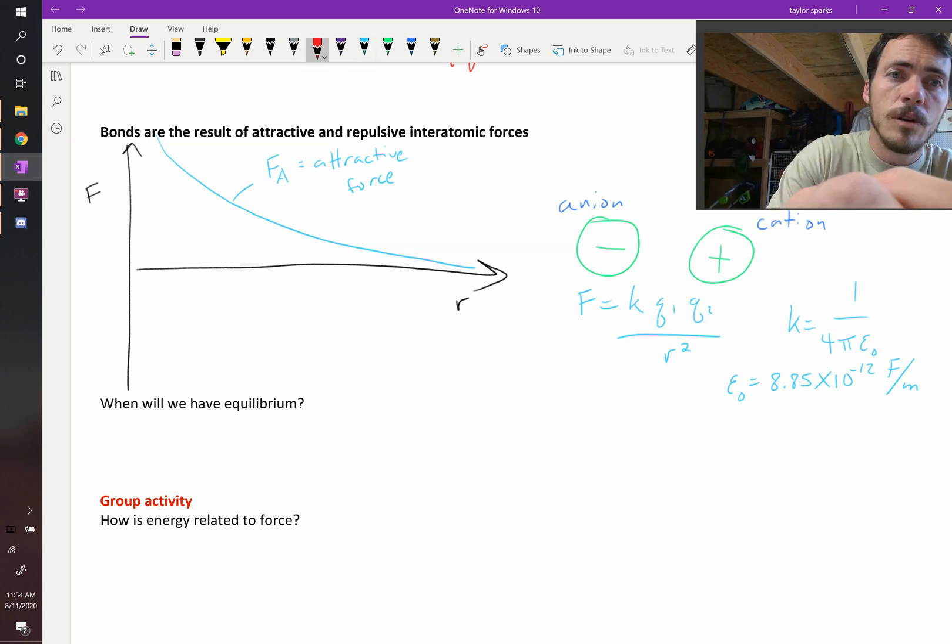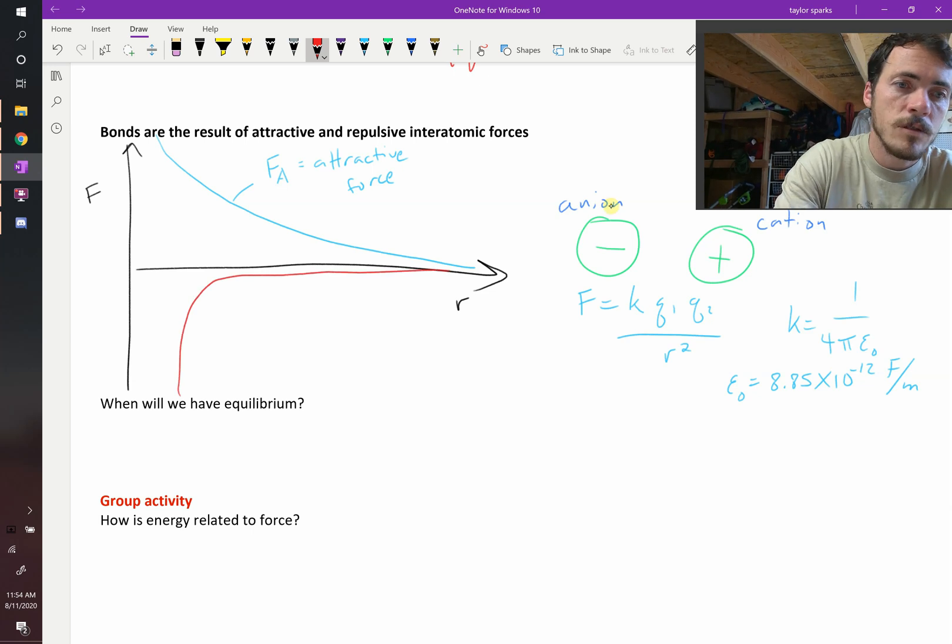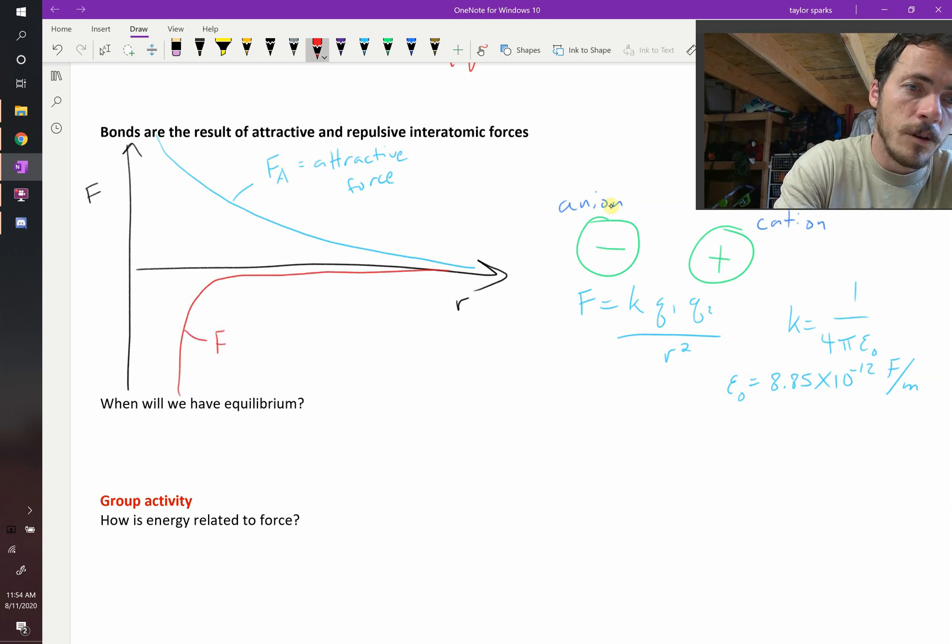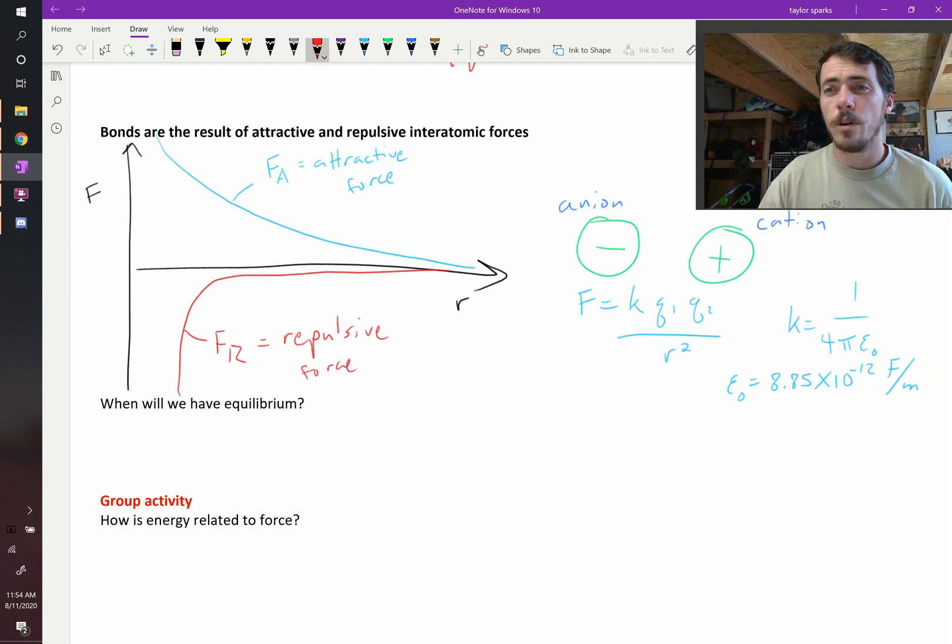So we're going to draw this in red, the repulsive force, and it looks something like this. It's a really strong force but it falls off fast. So this will be F sub r, our repulsive force. And again, think of it like these electrons just really, really do not want to overlap one another. Since atoms have big electron clouds around them, as they get too close those clouds start to overlap and that is a really strong repulsive force.